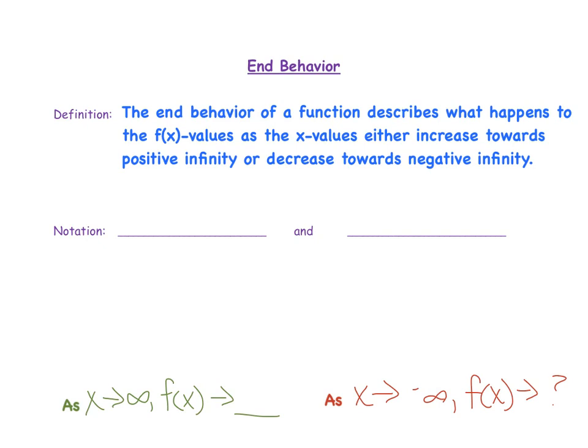First we need to remember what f of x values are — they are simply the y values on any given function. Also remember that x values are the independent values and f of x or y values are the dependent values. So basically end behavior is describing the direction that your y value is going as your x value either increases, meaning goes in a positive direction, or decreases, going in a negative direction.